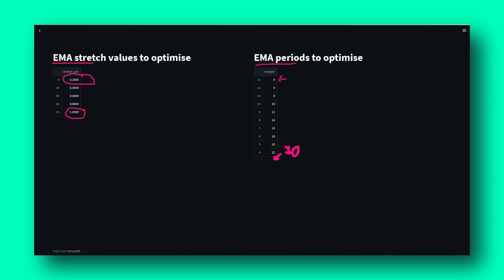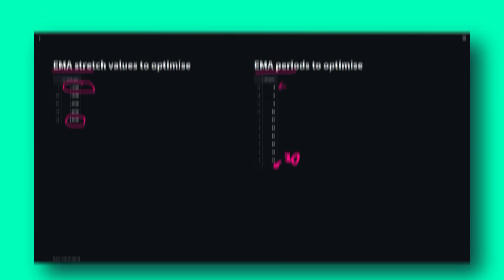Word of caution: I optimized on all my available data, which is not recommended as you are likely to introduce what's referred to as curve fitting. But for the purposes of this video, just to simplify things, I ran the optimization on my entire data set. When optimizing trading system variables, I recommend that you follow the in-sample/out-of-sample approach. Anyway, all test iterations are shown on my screen.